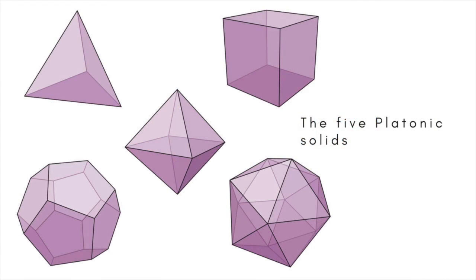A polyhedron is regular if all of its faces are exactly the same size and shape, and if the same number of faces meet at each vertex. There are only five regular convex polyhedrons, the Platonic solids.